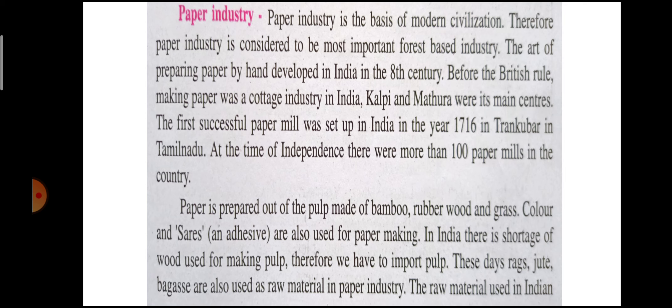The art of preparing paper by hand developed in India in the 8th century. Before the British rule, making paper was a cottage industry in India. Kalpi and Mathra were its main centers. The first successful paper mill was set up in India in the year 1716 in Trangkubar in Tamil Nadu. At the time of independence, there were more than 100 paper mills in the country.